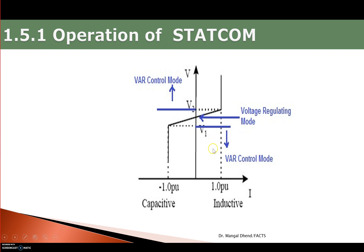Now looking at the VI characteristics: the Y-axis is voltage and the X-axis is current. As current is varied, voltage changes — as current increases, voltage also increases. Voltage can be varied only within certain limits: there is a minimum and a maximum voltage limit. This range of variation in the voltage regulating mode is visible on the characteristics diagram.